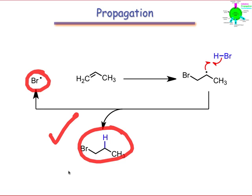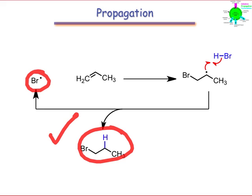The regenerated radical goes on to react with another molecule of alkene and its regeneration continues until all of the HBr present has been exhausted. In the next webcast, we'll discuss termination steps which can throw a wrench in the works of radical chain mechanisms.